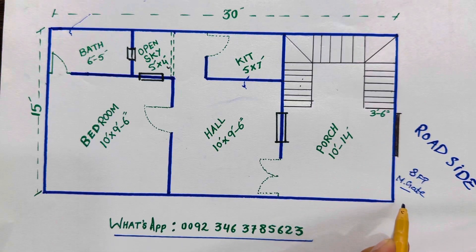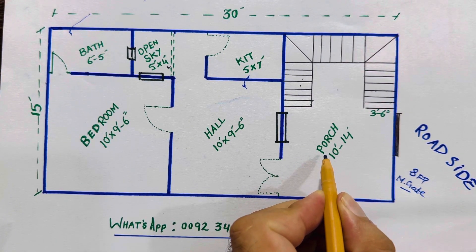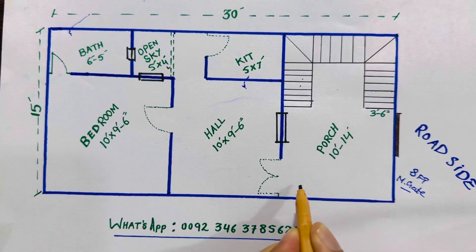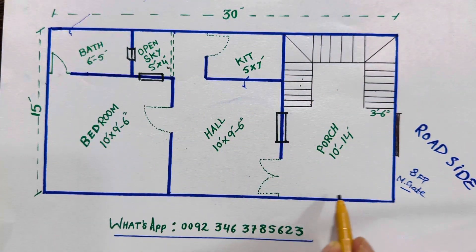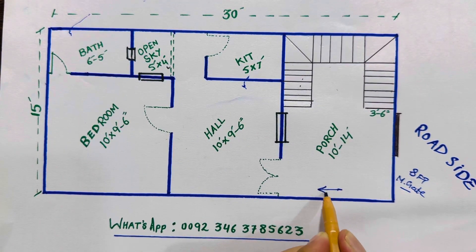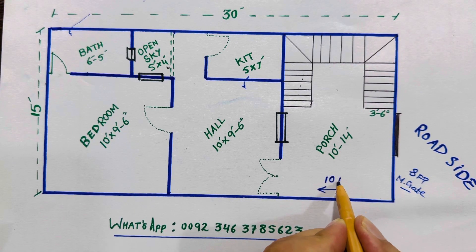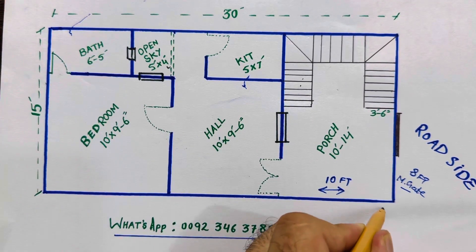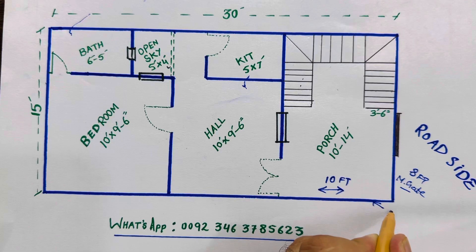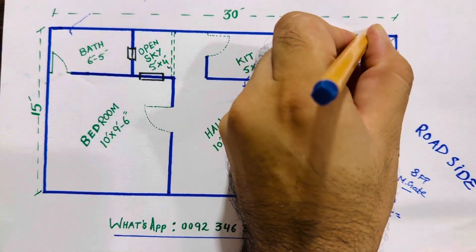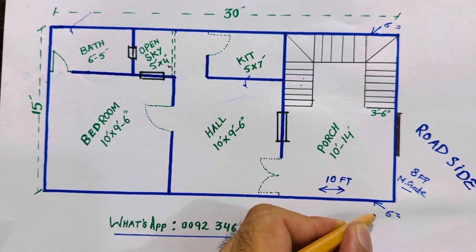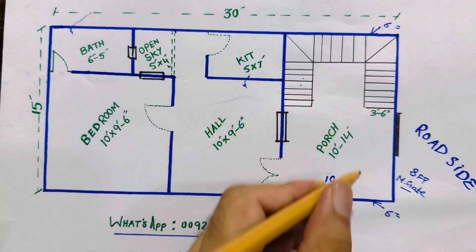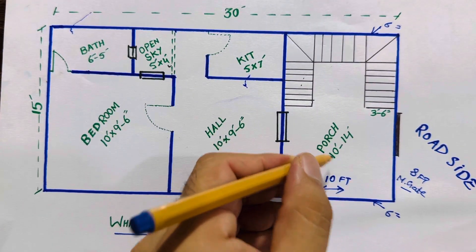When you enter by this sliding gate, you can see this is a porch, which size is 10 feet by 14 feet — width is 14 feet and length is 10 feet. You can park a small car here. This is 15 feet total, and each wall thickness is 6 inches. So 6 inches plus 6 inches equals 1 foot, minus 1 foot from 15 feet gives us 14 feet. The porch width is 10 feet.